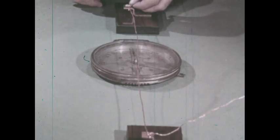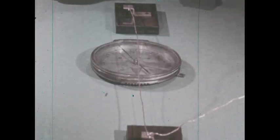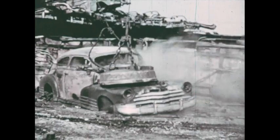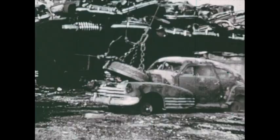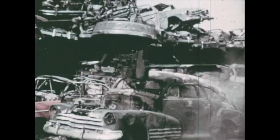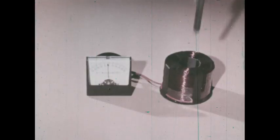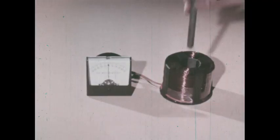We know that current flowing through a wire produces a magnetic field. Electricity can produce magnetism. We know that a solenoid can be made into an electromagnet to lift great weights. We know that magnetism can generate electricity. When a wire cuts across magnetic lines of force, an electric current is generated.